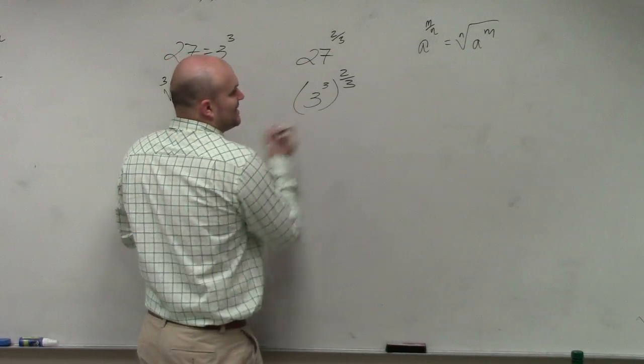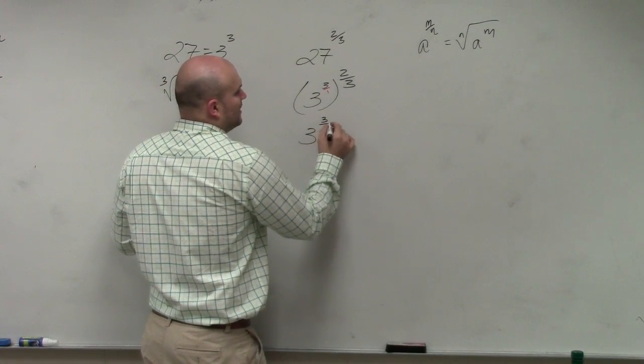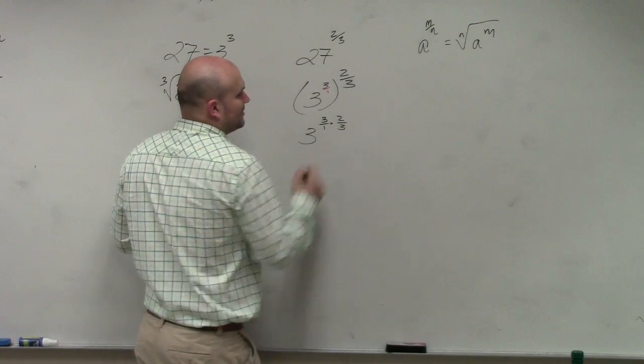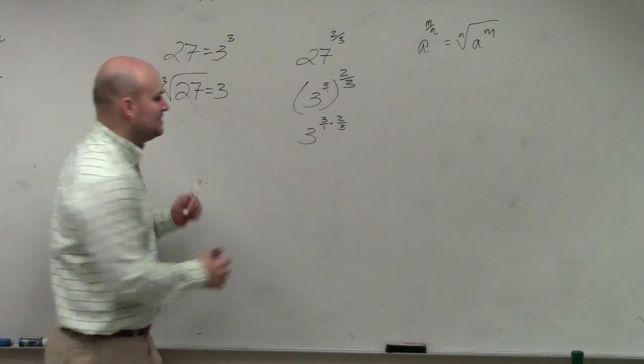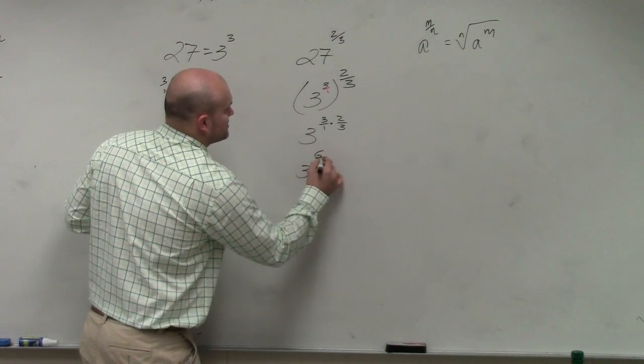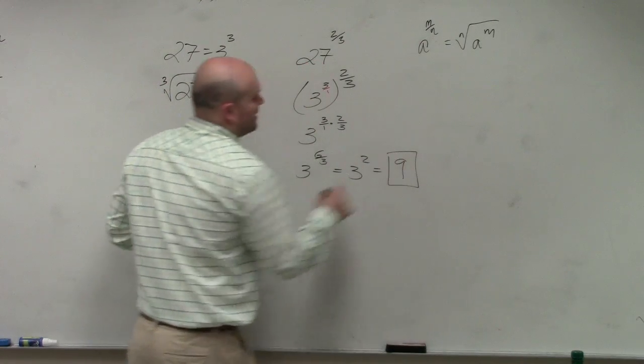So remember, this is technically 3 over 1. So this is 3 raised to the 3 over 1 times 2 over 3. And what's 3 over 1 times 2 over 3? That's 3 to the 6 over 3, which is equal to 3 squared, which is equal to 9.